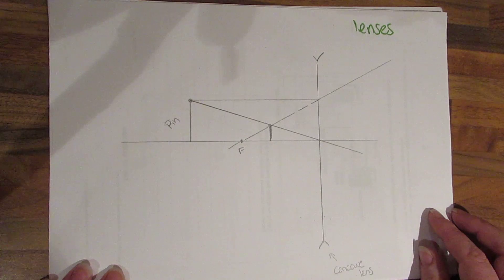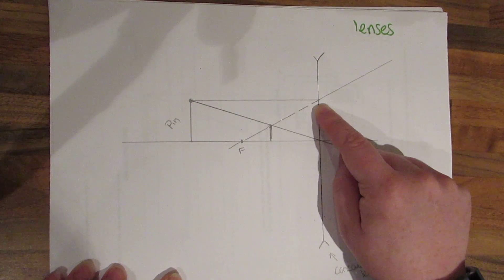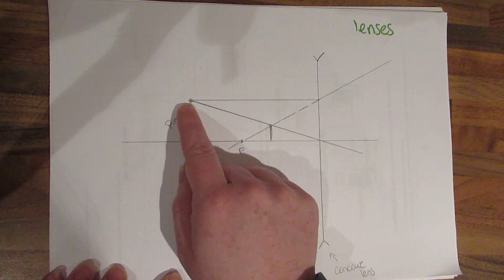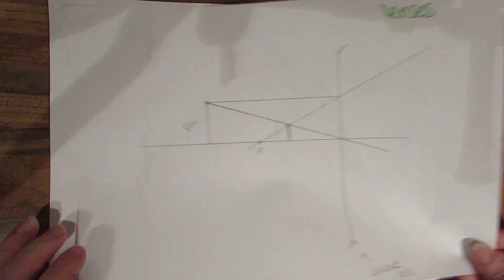This is a diverging lens here, same rules slightly different. From the top of the image straight across and then away going through this focal point, from the top of the image through the middle of the lens and where they cross that's the top of the image.